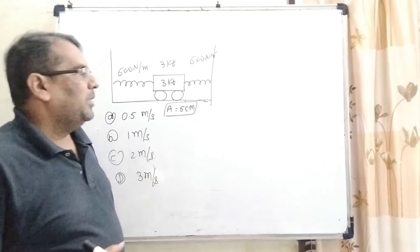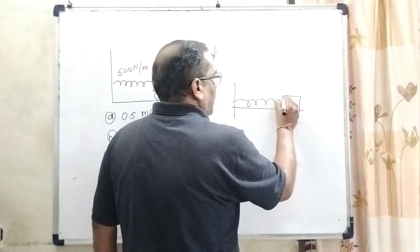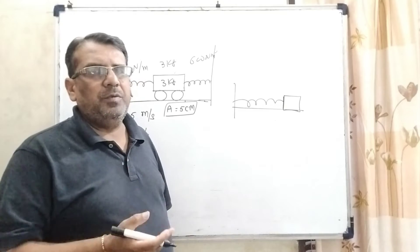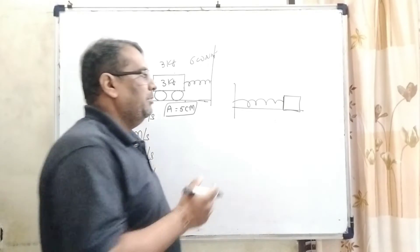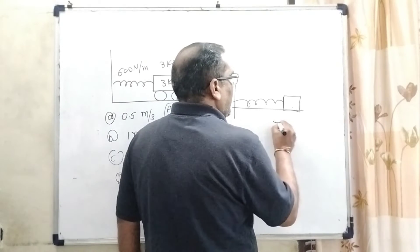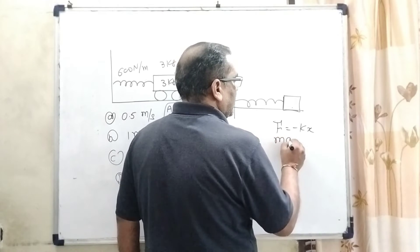As we know that when any object or body is connected with a spring and whenever we give it some push, the spring starts to oscillate. Why does it oscillate? Because restoring force is generated. And therefore, F = -kx, but F = ma.